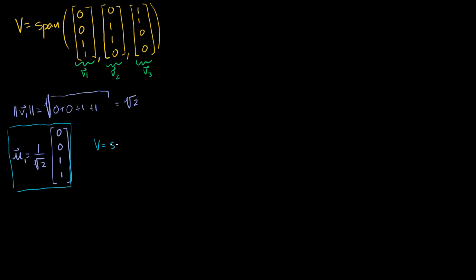The span of V1, V2, V3 is the same as the span of U1, V2, and V3. So V is now equal to the span of U1, V2, and V3, because U1 is just a scaled version of V1 — I can represent any linear combination of one set with the other. We've just normalized the first vector.